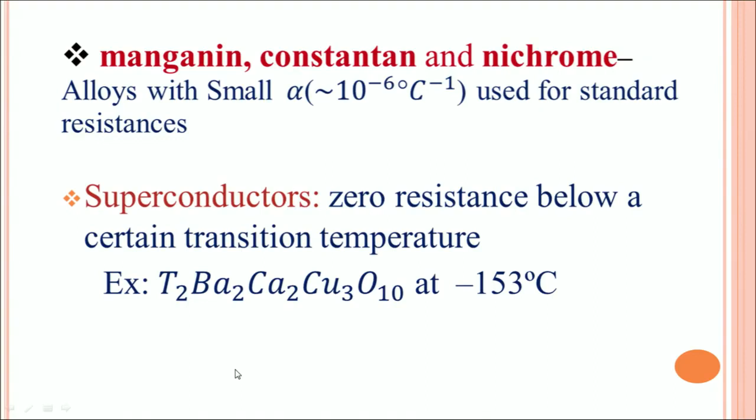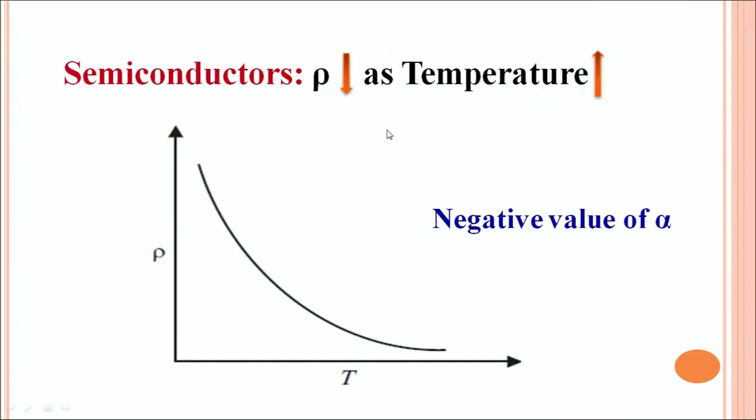Another type of special materials are superconductors. These are special materials which have zero resistance below a certain transition temperature. This is a typical example: this material acts like a superconductor at minus 153 degrees centigrade.